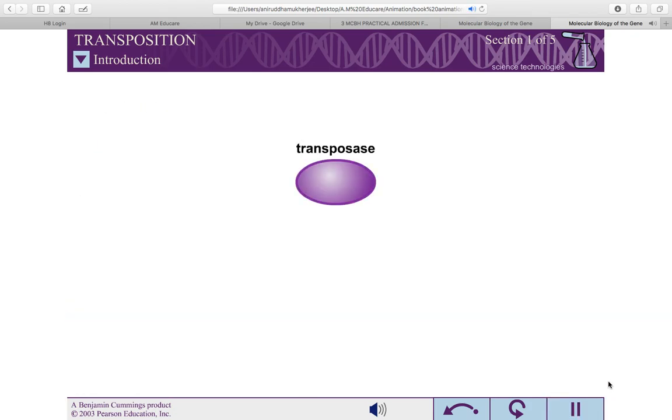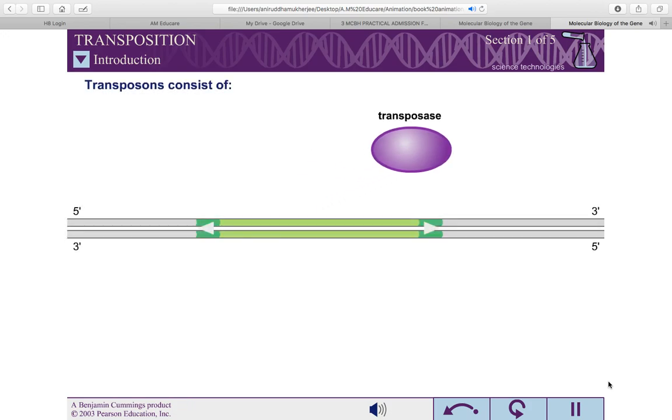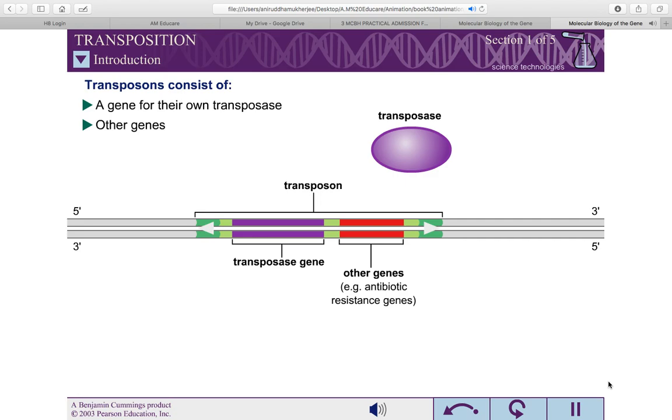The recombinases responsible for transposition are usually called transposases. Transposons carry a gene encoding their own transposase. Transposons may carry a few additional genes as well. For example, many bacterial transposons carry genes for antibiotic resistance.